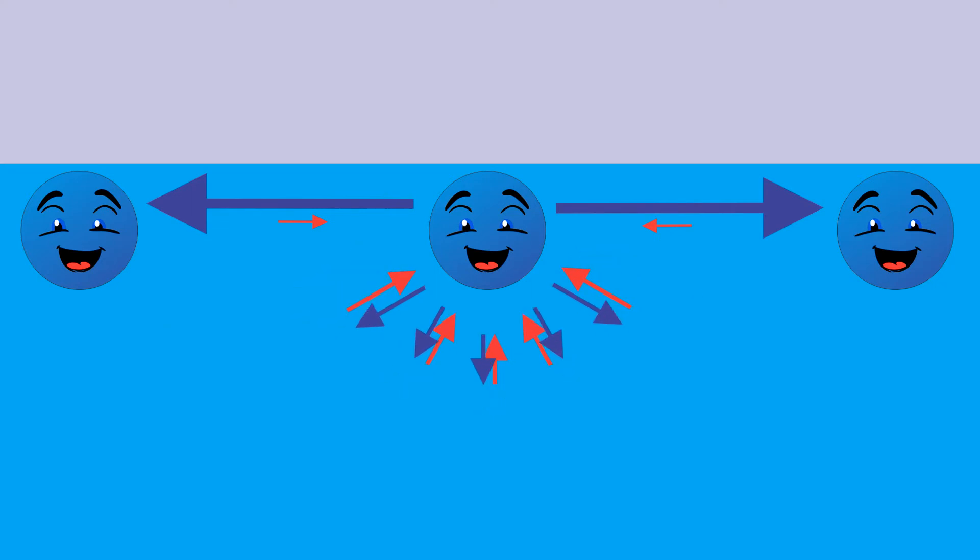On the surface, the symmetry is disturbed in the vertical direction because no molecules are above the surface.